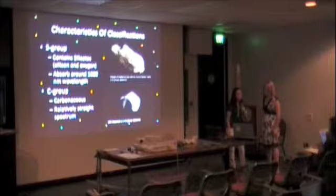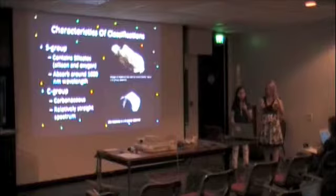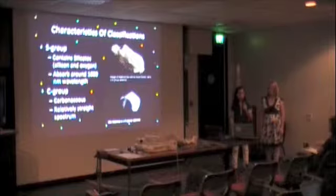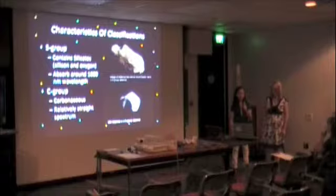There are many different ways to classify asteroids, and the way we're going to discuss is physical classification. The two most general groups are S-group and C-group. S-group asteroids contain silicates — basically silicon and oxygen — and they absorb wavelengths of about a thousand nanometers, in the infrared zone. C-group asteroids are carbonaceous and have a relatively straight spectrum; they don't absorb infrared waves.